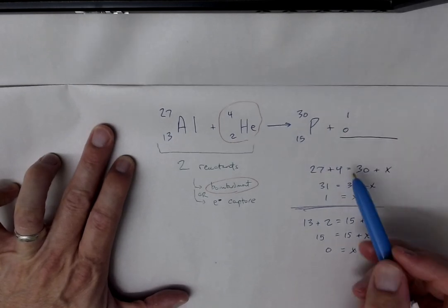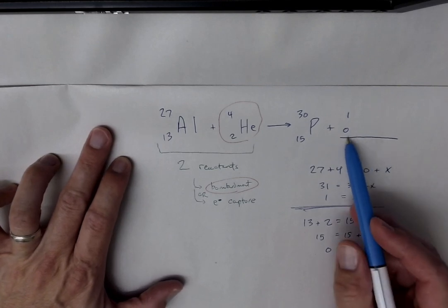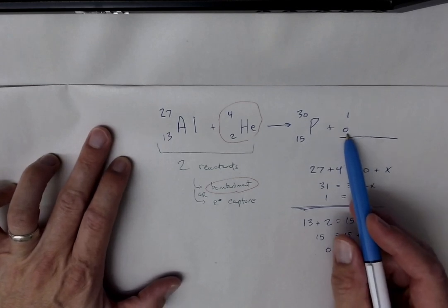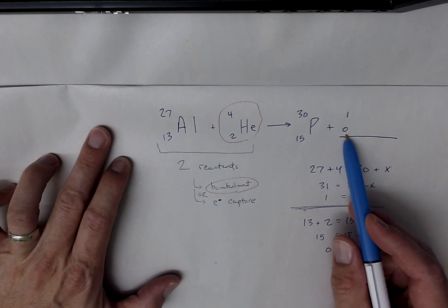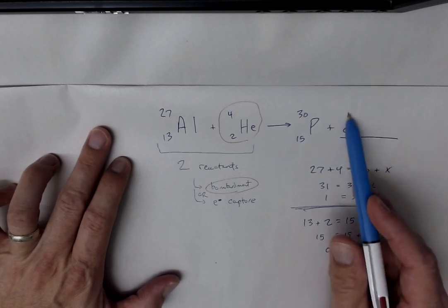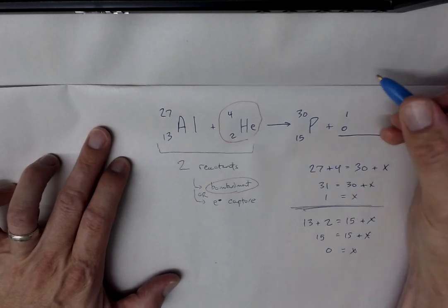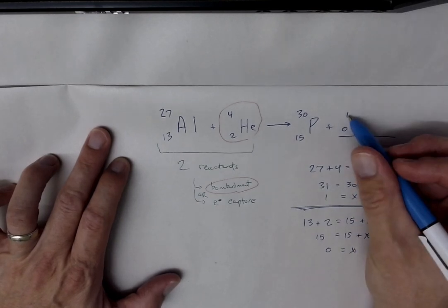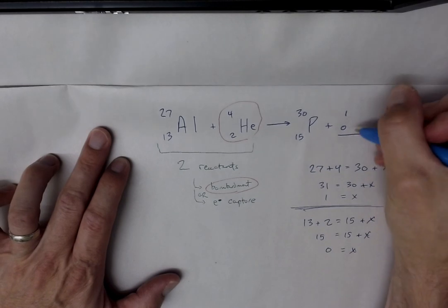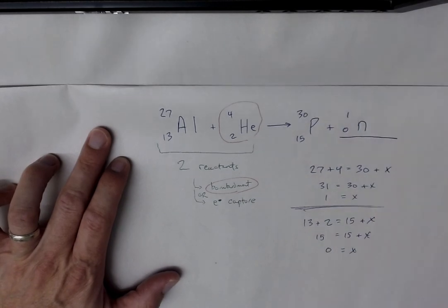So you ask yourself, it's not an element on the periodic table if it has an atomic number of 0. So let me think through my special particle list of options, and something with no atomic number, but it does have one atomic mass unit, that would be a neutron.